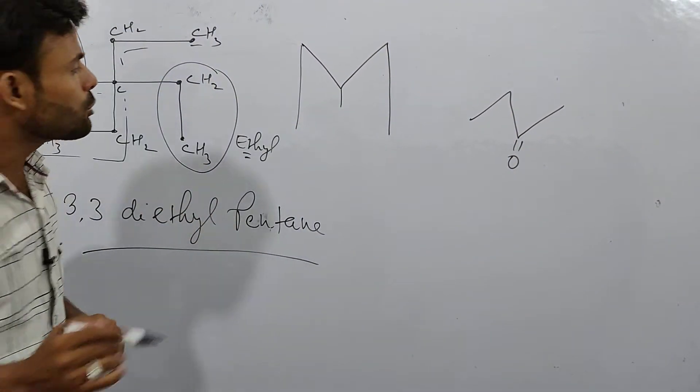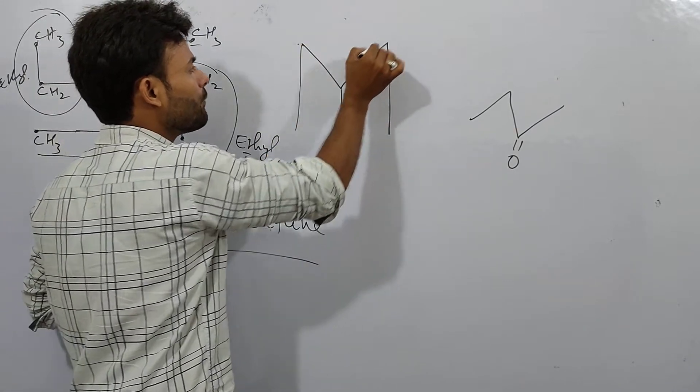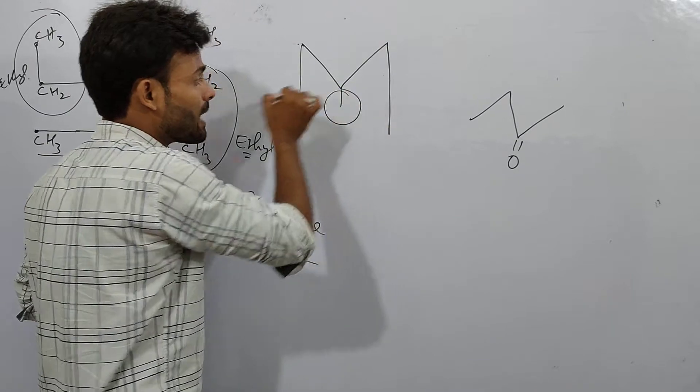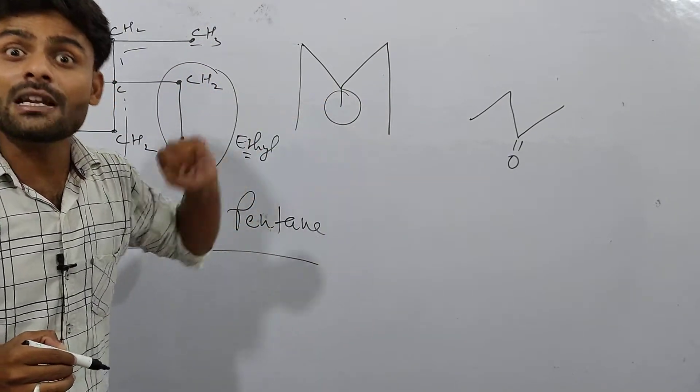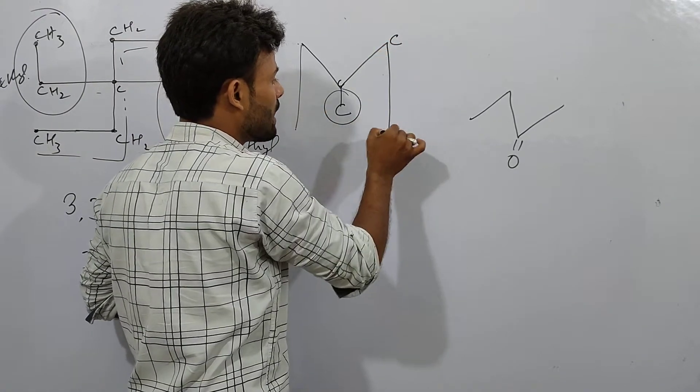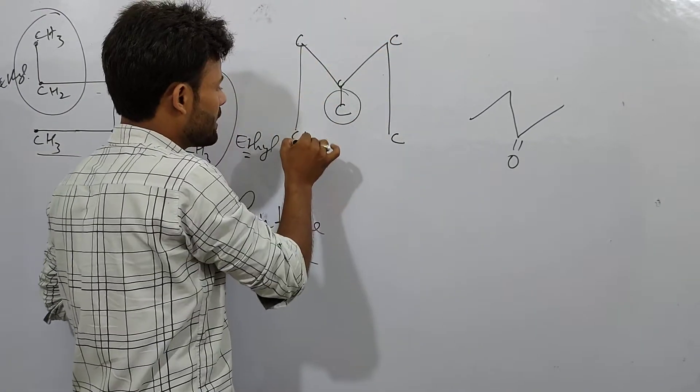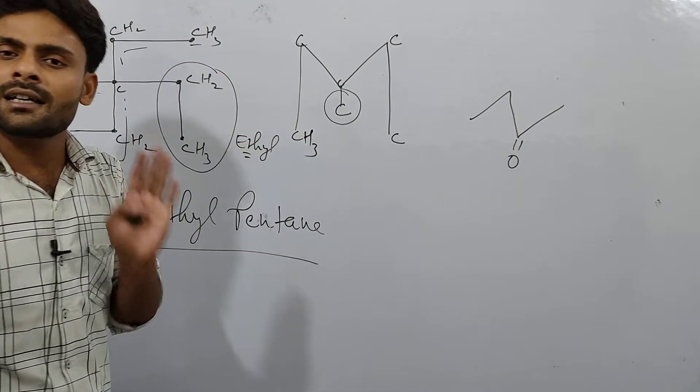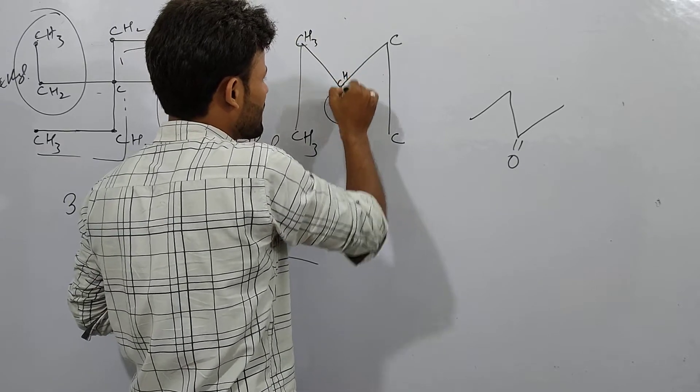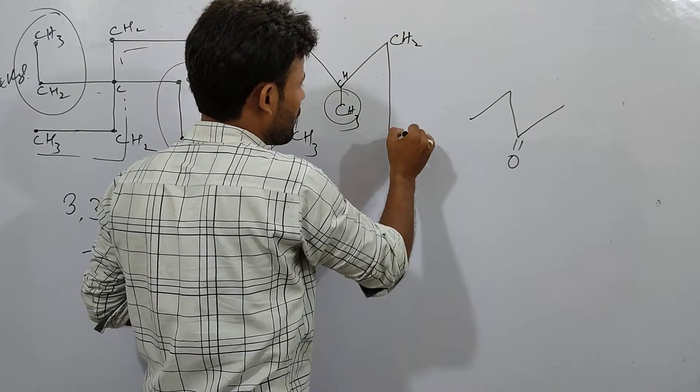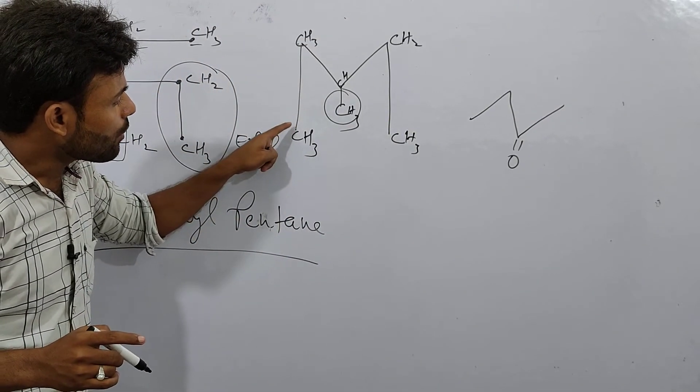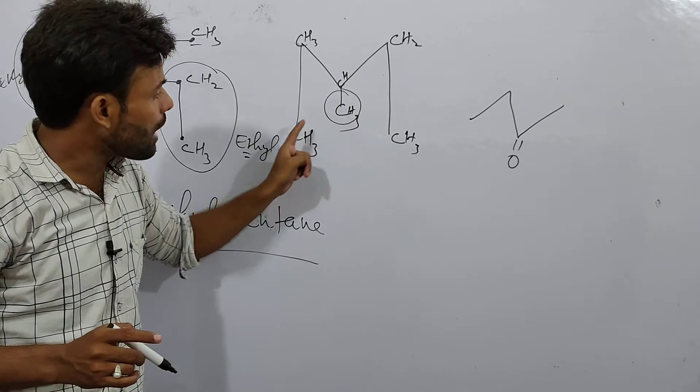This is the second structure. So you can see, 1, 2, 3, 4, 5. This is also 5 carbons. If you count it, this is your branch. This will be the parent chain. So you can see, here is carbon, here is carbon, here is carbon. You can also see, here is 1, 2, 3. This is the carbon structure. H3C is methyl. 1, 2, 3, 4, 5.